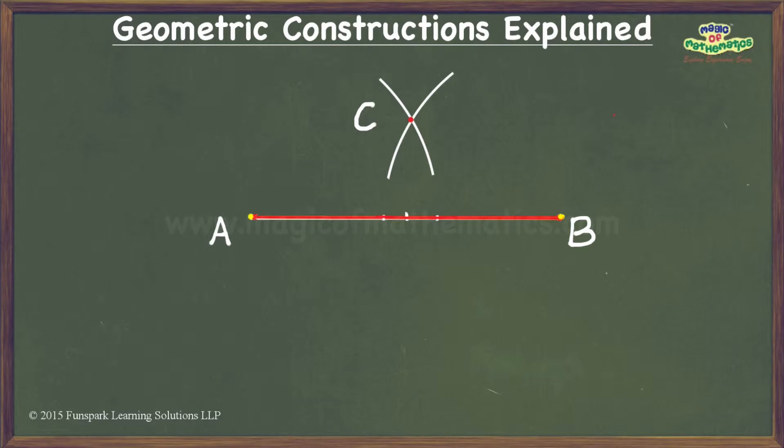Using the same radius I will repeat the exercise below line segment AB resulting in the point of intersection D.